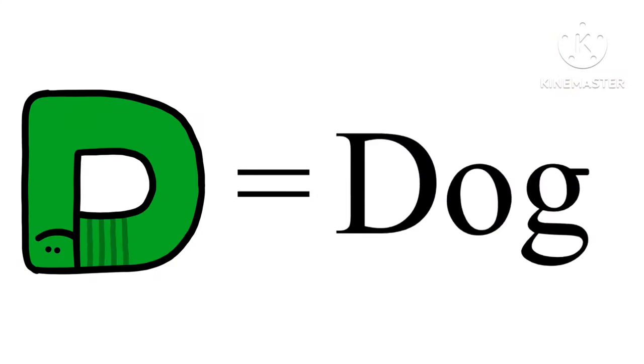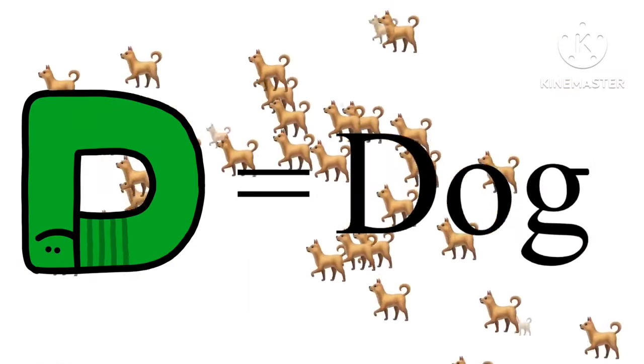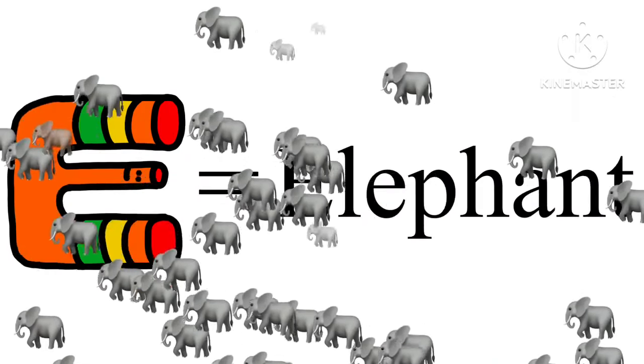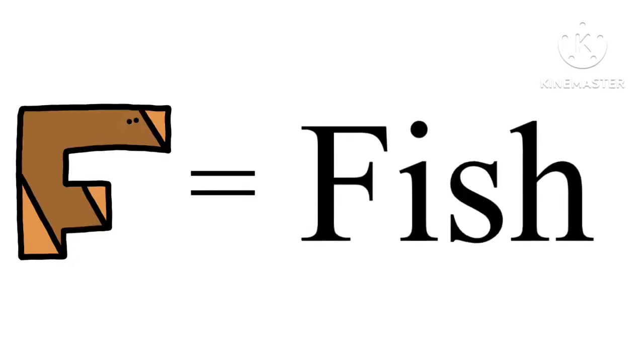D is for Dog. E is for Elephant. F is for Fish.